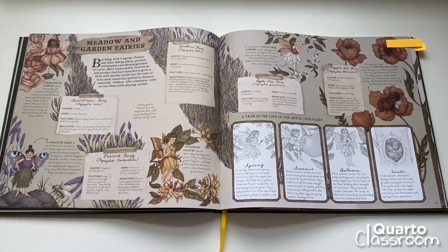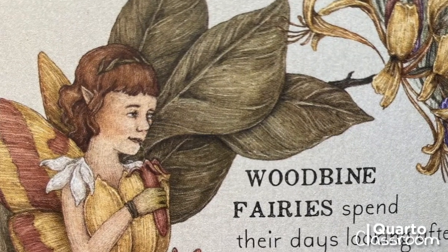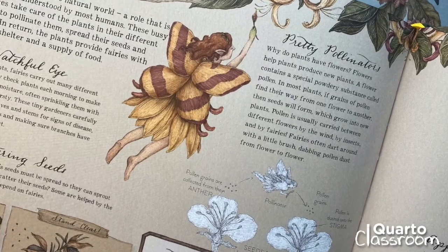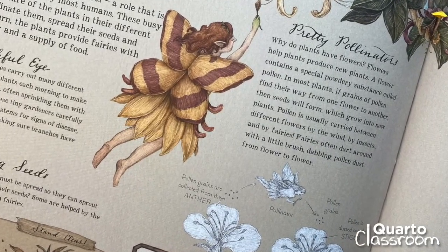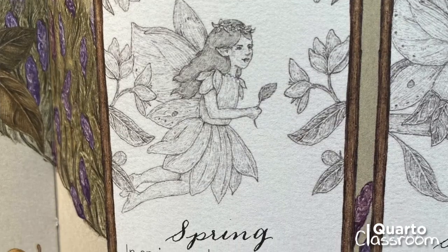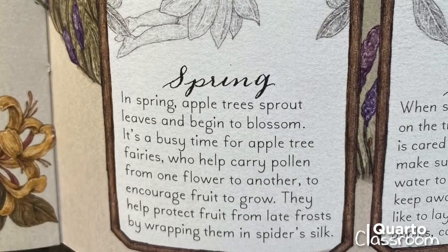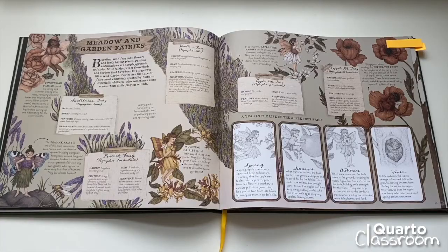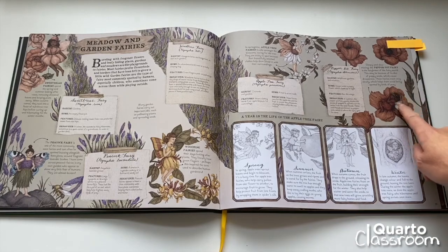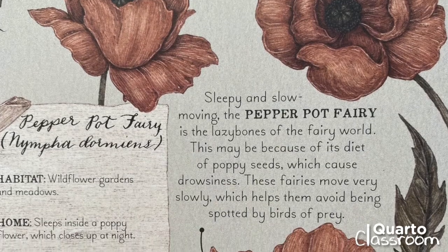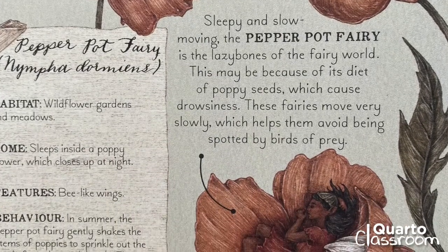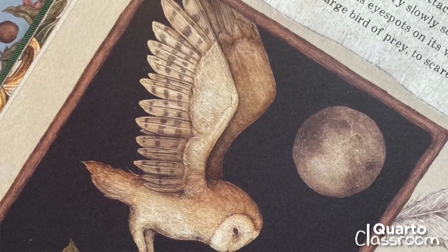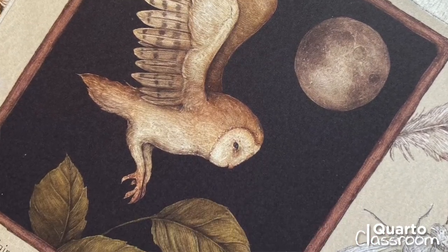Here's the little woodbine fairy — woodbine fairies spend their days looking after plants. They literally have green fingers; perhaps this inspired the term used to describe human gardeners. In springtime, apple tree fairies bustle amongst the blossoms caring for the tree. They're tricky to spot because their beautifully stitched clothes help them blend in with their surroundings. Sleepy and slow moving, the pepperpot fairy is the lazy bones of the fairy world — this may be because of its diet of poppy seeds which cause drowsiness. These fairies move very slowly, which helps them avoid being spotted by birds of prey.